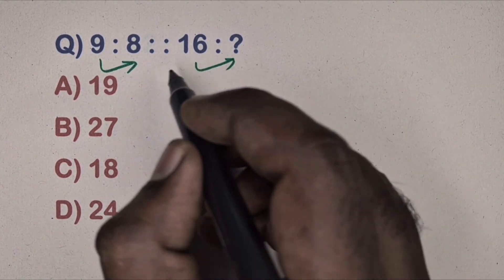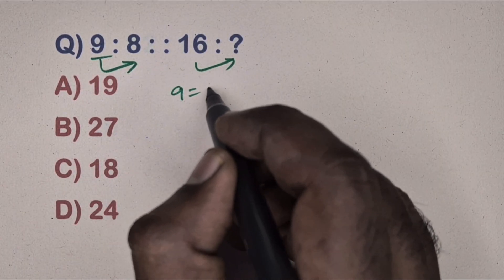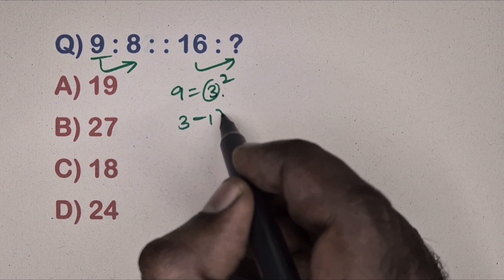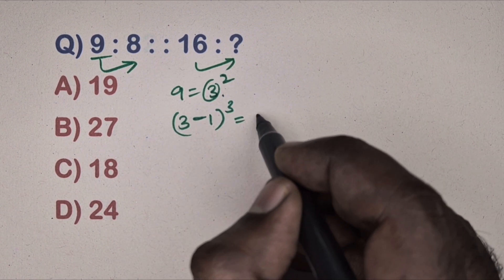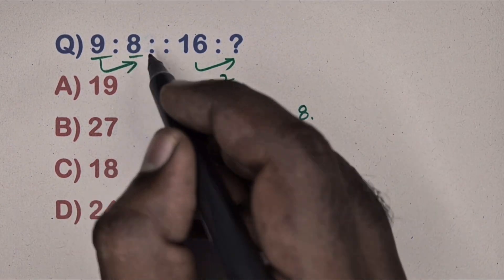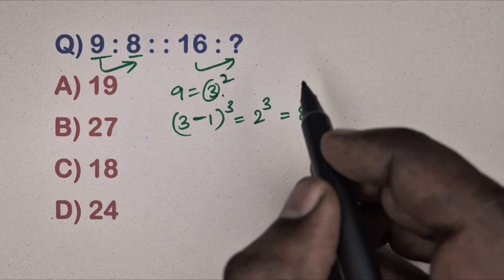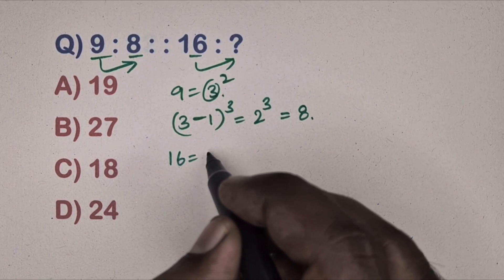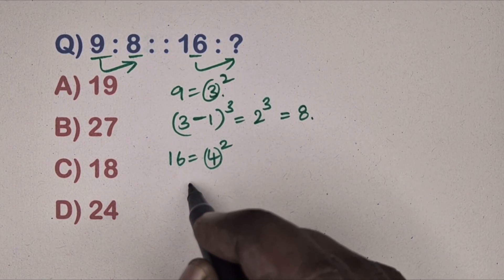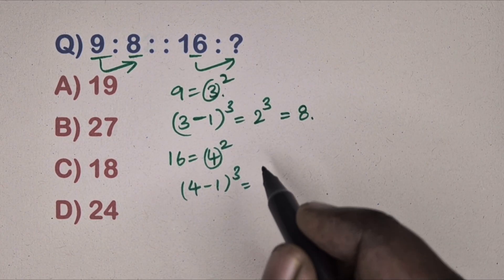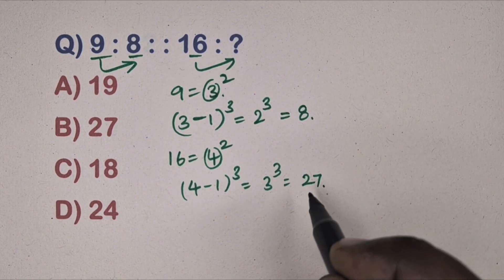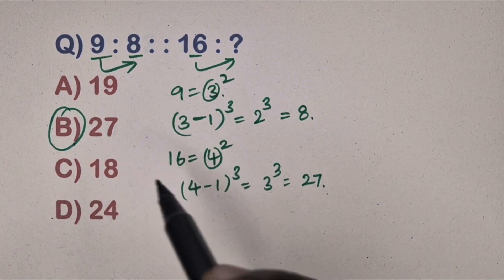Next question: 9 is related to 8, 16 is related to which number? Take 9, write as 3², base is 3. Take base 3, compute (3 − 1)³ = 2³ = 8. Same way, take 16 = 4², base is 4. Compute (4 − 1)³ = 3³ = 27. Option B is the correct answer.